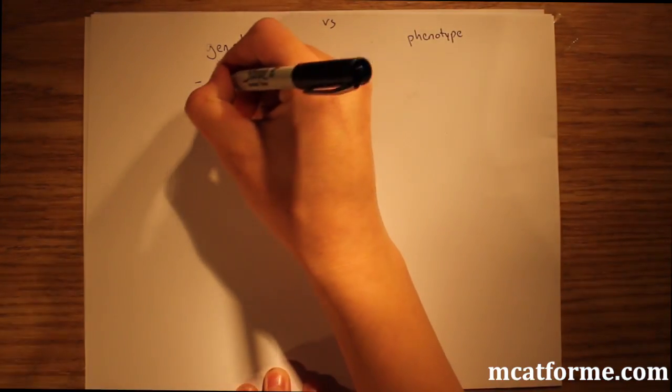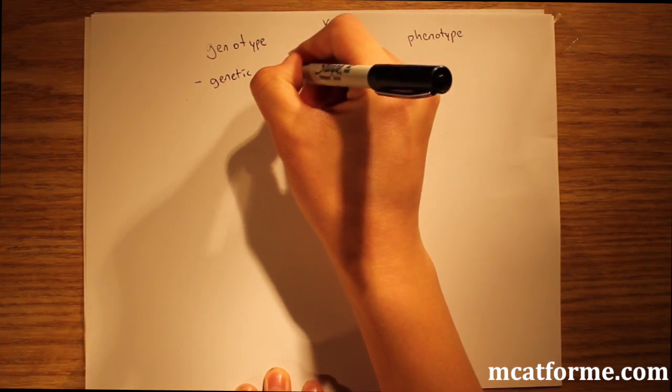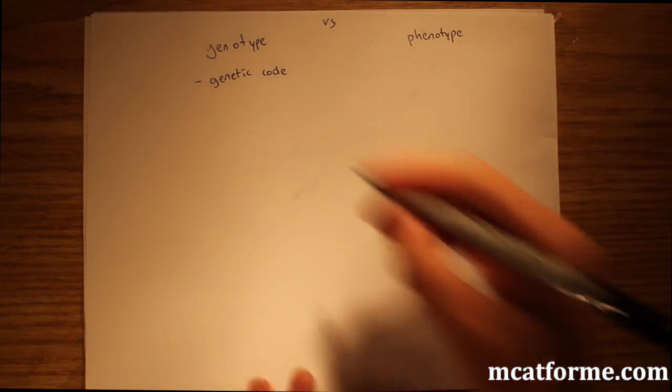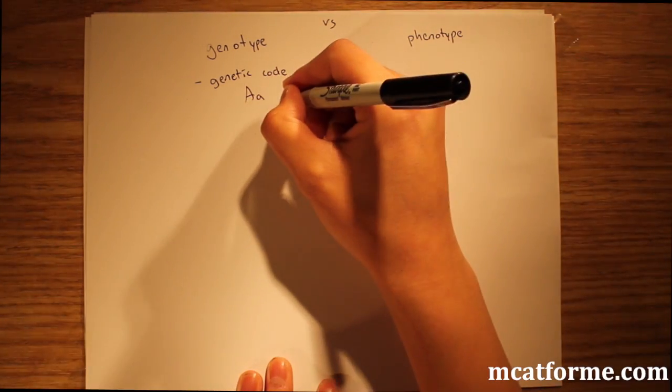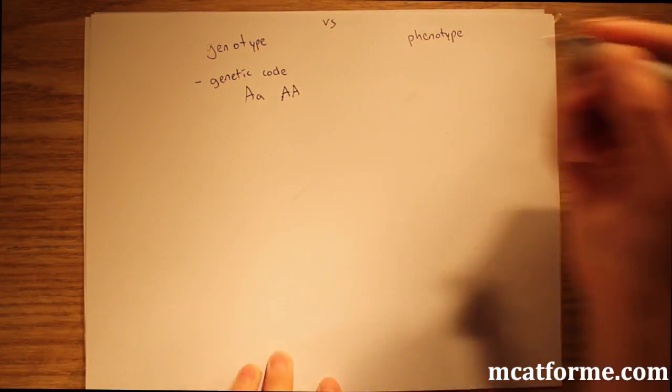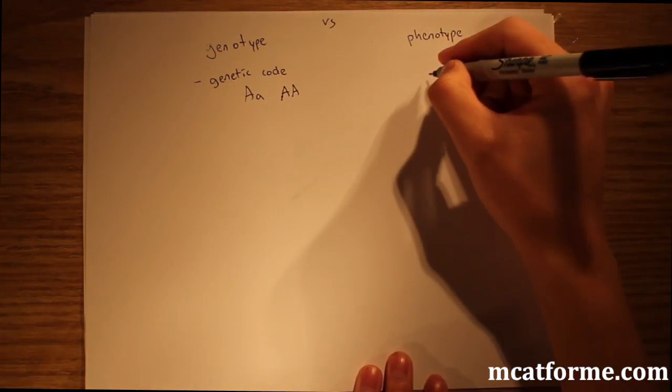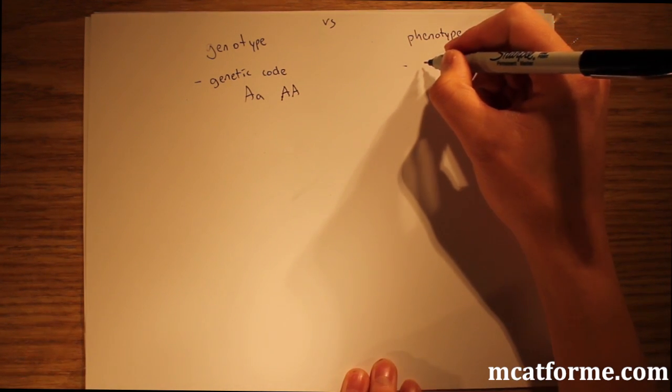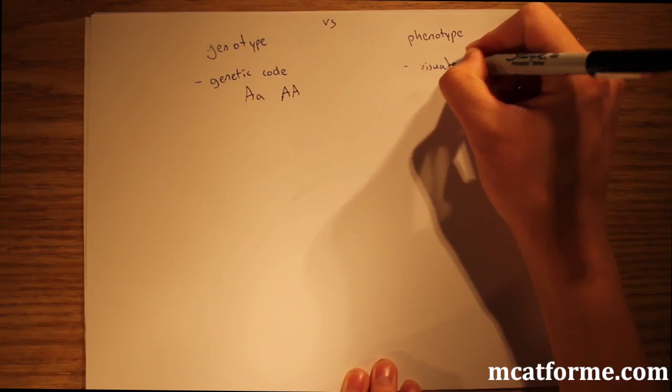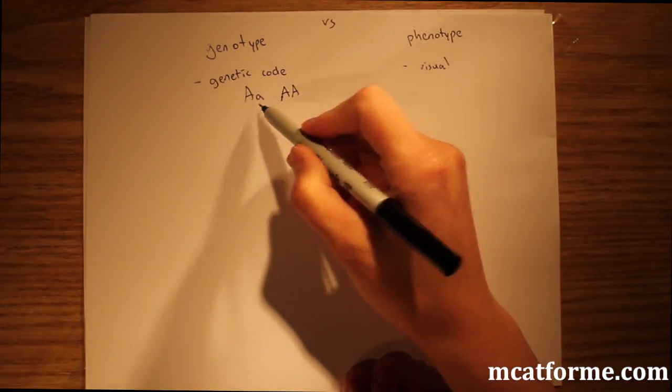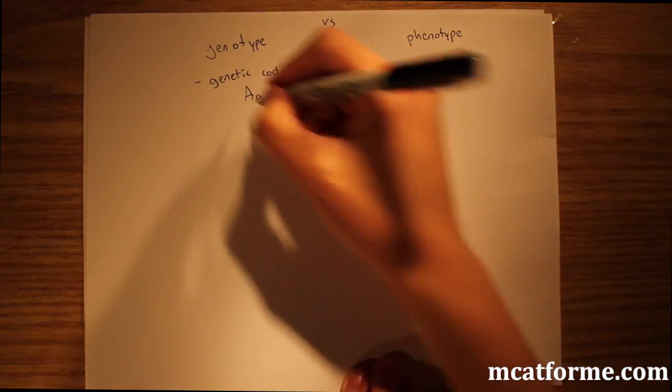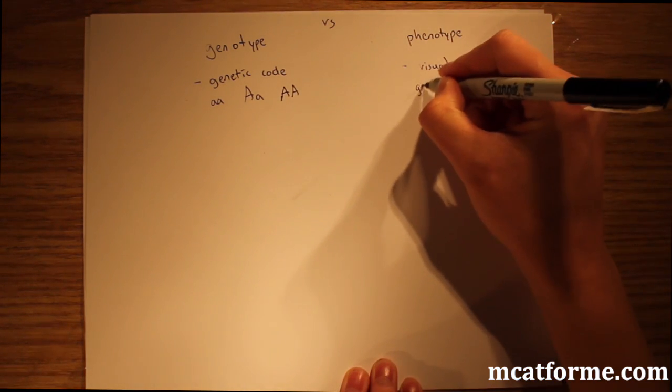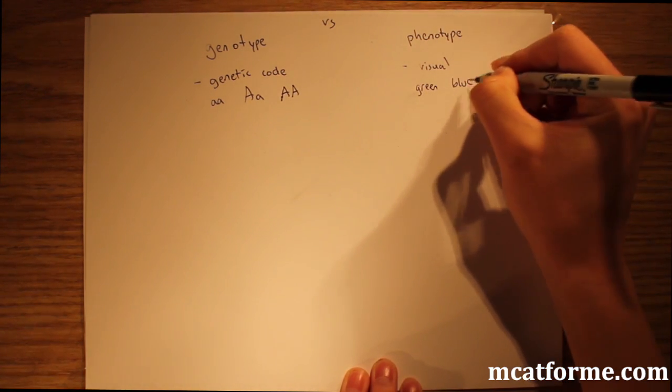Genotype versus phenotype. Genotype is based on the genetic code, so you're going to have a certain genotype, AA versus Aa and whatnot, versus phenotype, which is the actual characteristics, the actual traits that are represented. It's what's visual. Someone who has AA, that could be blue eyes versus somebody who has little a, little a, that could be green eyes.